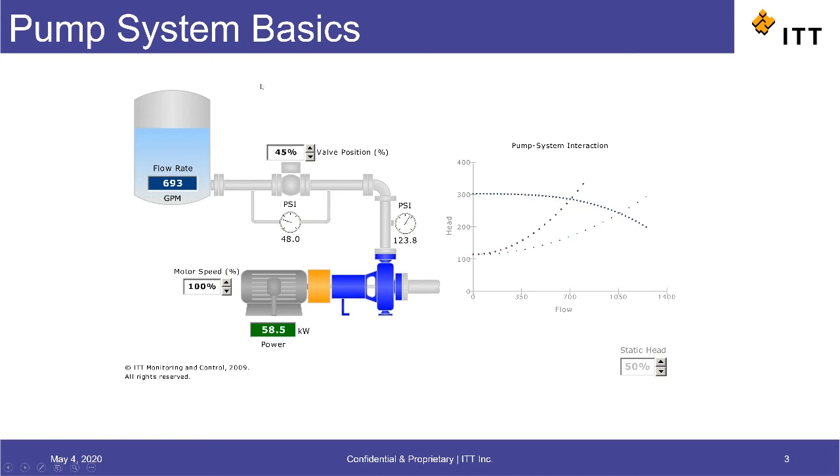The second way to control our pump flow rate is by altering the motor speed and therefore the pump speed using a VFD. Again, we're going to try to achieve that 700 gallons per minute. We're going to fully open up the discharge valve and then reduce the motor speed.